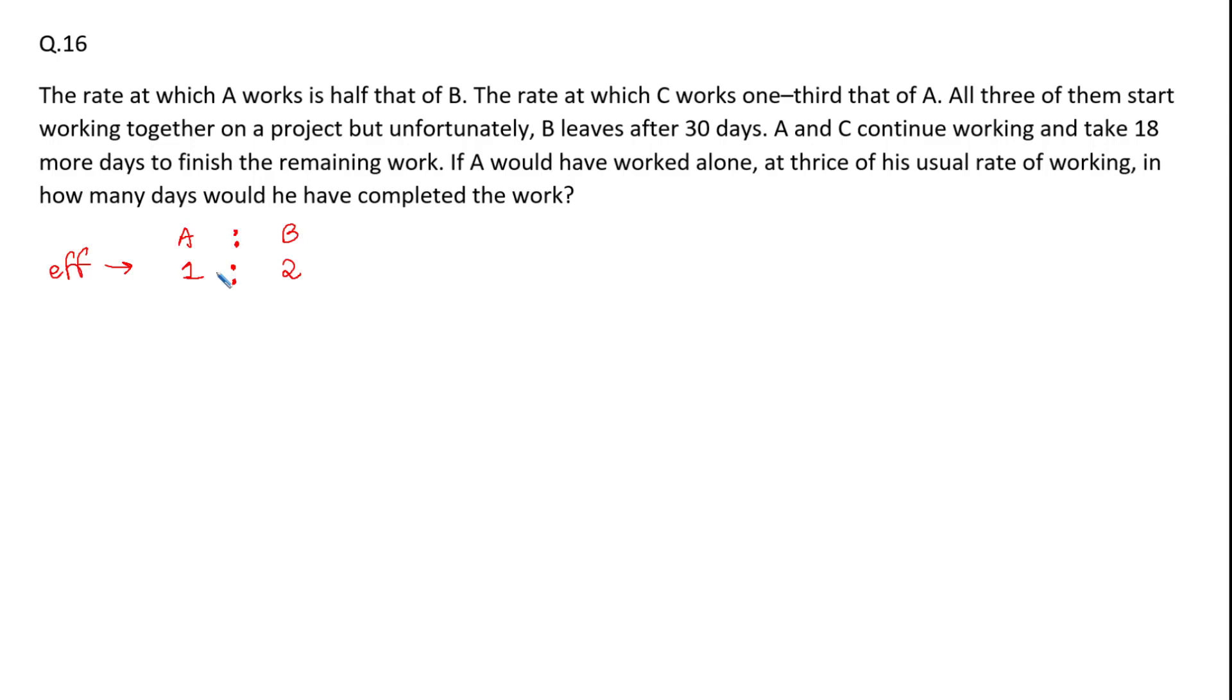Now the rate of work of C is one third of A. So if A does three units of work in one day, C will do one third of A, that is one unit of work in one day. So now in both ratios the value of A should be the same. So let's multiply first ratio by three.